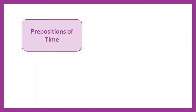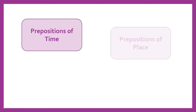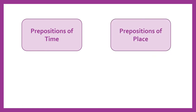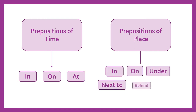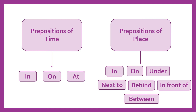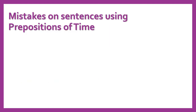First of all, we have seen two types of prepositions. We have seen the prepositions of time and the prepositions of place. For prepositions of time, we have seen 'in,' 'on,' and 'at.' For prepositions of place, we have seen 'in,' 'on,' 'under,' 'next to,' 'behind,' 'in front of,' and 'between.'